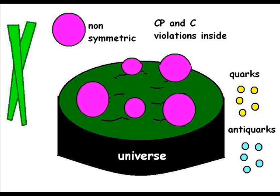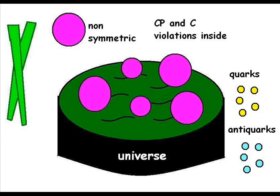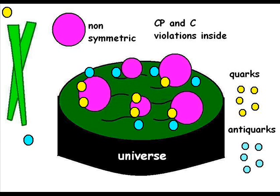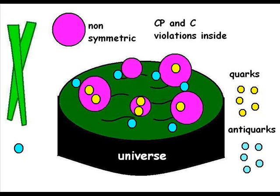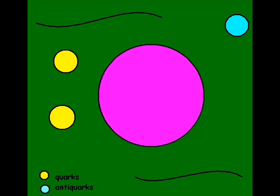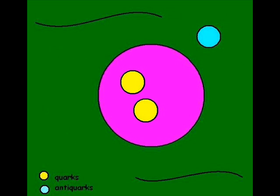Baryon number violating processes are rapid in the symmetric phase, but shut off out of equilibrium inside the bubbles. Finally, a plasma of quarks and antiquarks with C and CP violating interaction permeates the universe. Now, suppose that as the surface of expanding bubbles sweep through the plasma, antiquarks are less likely to enter the bubbles than quarks, because of C and CP violation.